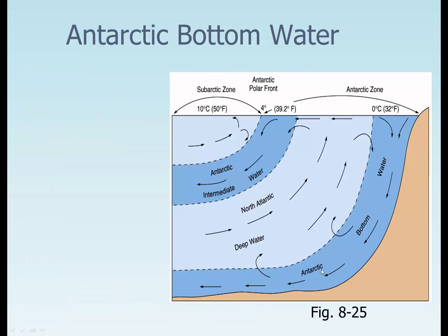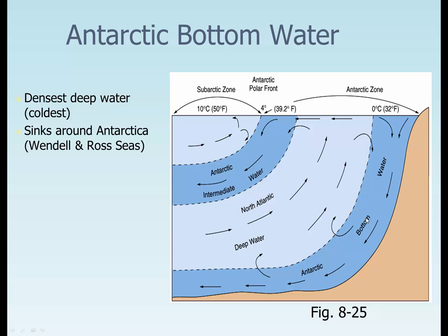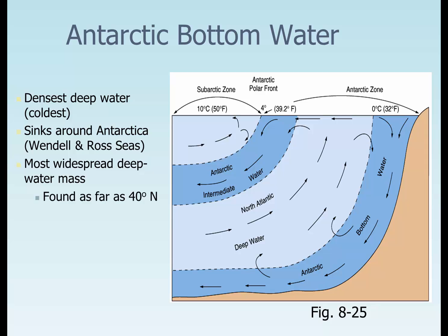Antarctic bottom water — you can see we have very cold water down here. Warmer water at the surface causes lots of evaporation, so we get salty water and it sinks. This is the deepest water on the planet — it is the coldest, and it sinks around Antarctica, the Weddell Sea, and the Ross Seas. It is the most widespread deep water mass on the planet, and it can be found as far as 40 degrees north.